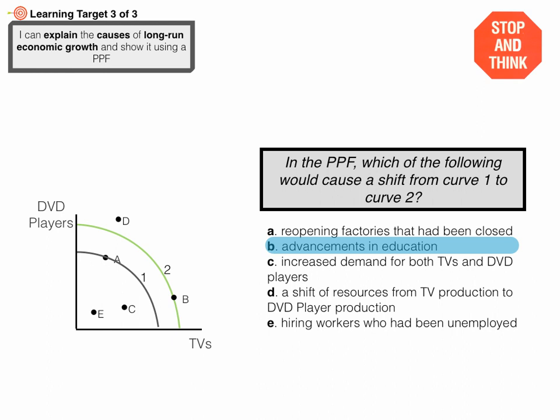Let's explain why the other options are not correct. A — reopening factories that had been closed. Those factories were available; we could have used them, we just weren't. So we weren't producing at our full possibility. Reopening them would be like moving from a point inside the curve to a point on the curve. C — increased demand for both TVs and DVD players — would not shift the curve out. Even though we might want more TVs and DVDs, we still don't have the ability to make more than before.